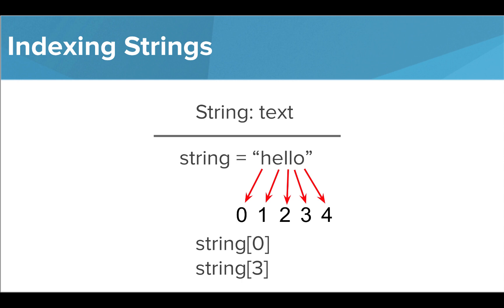Now, if we wanted to get a specific letter of our string, we write the variable name and use square brackets to denote which index value we want. So if I write string zero, the letter I would be finding is H. If I write string three, the letter I would find is the second L.